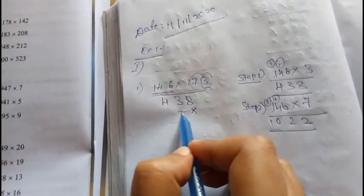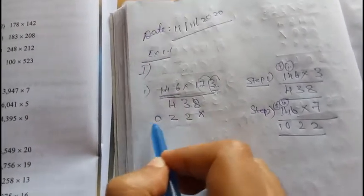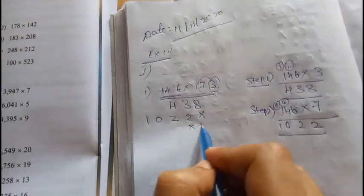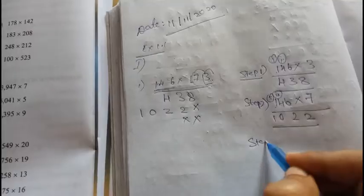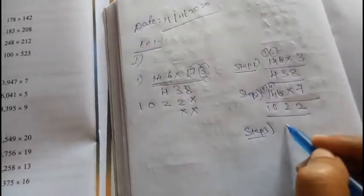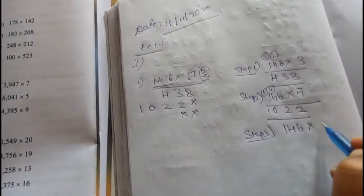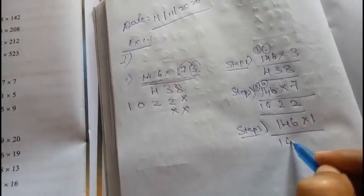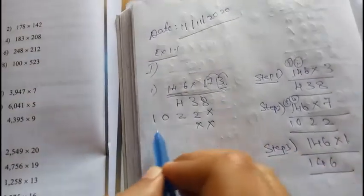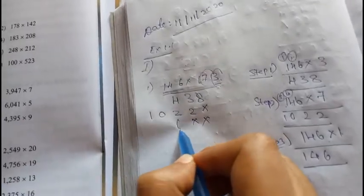7 times 1 is 7, plus 3 is 10. You need to write here 1022, and then put 2 into marks. Then take this number in step 3, which is 146 into 1.